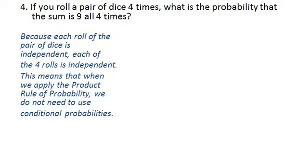We can just say it's the probability of rolling a 9 on the first roll times the probability of rolling a 9 on the second roll times the probability of rolling a 9 on the third roll times the probability of rolling a 9 on the fourth roll. They're independent events, so we don't have to think of these things as conditional events.